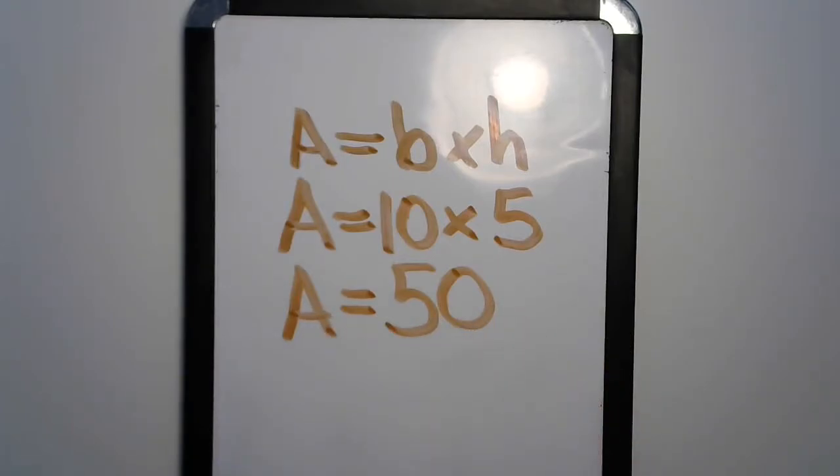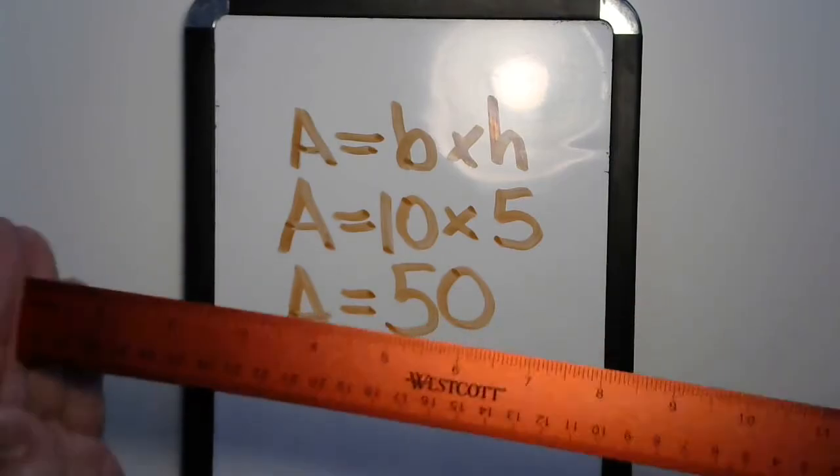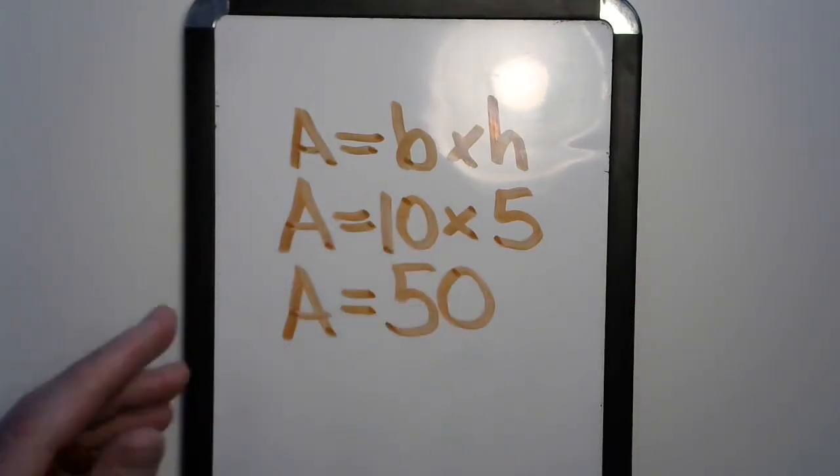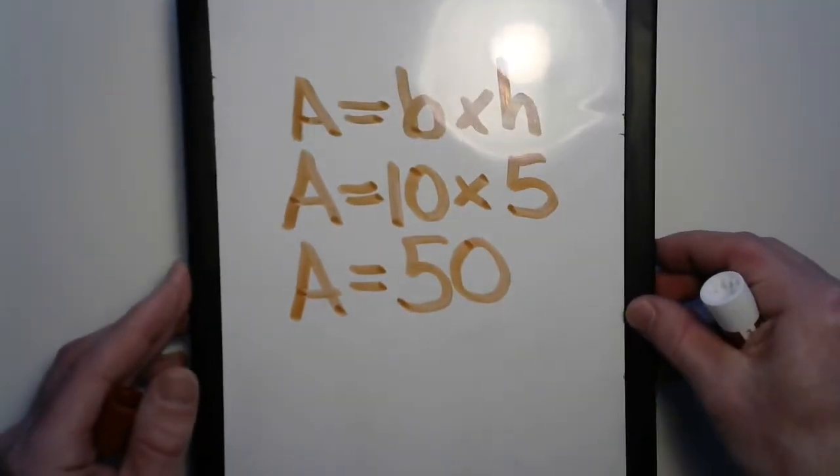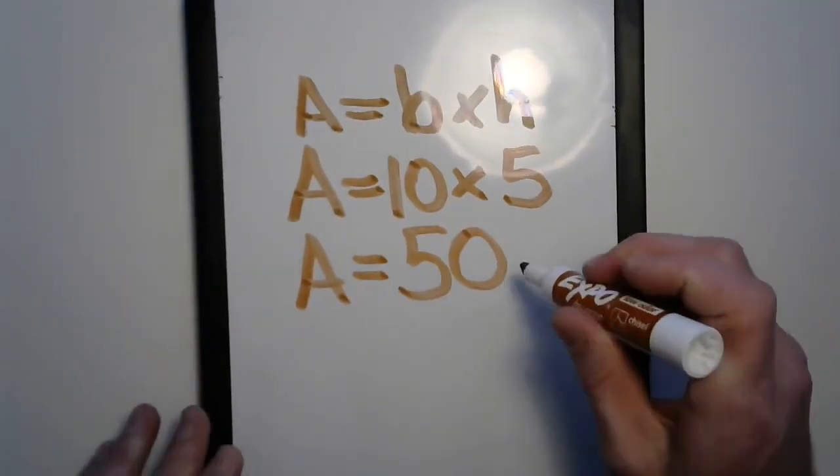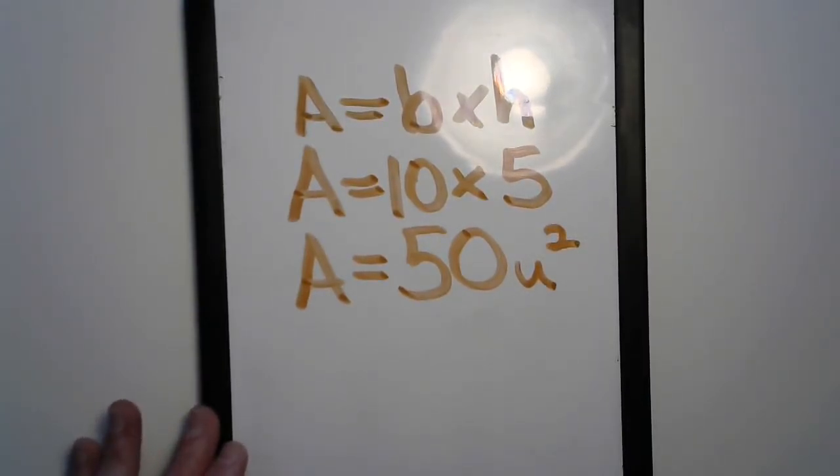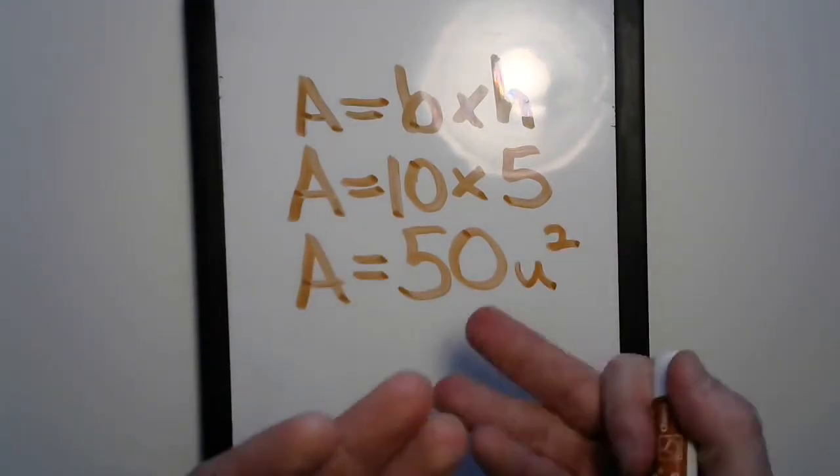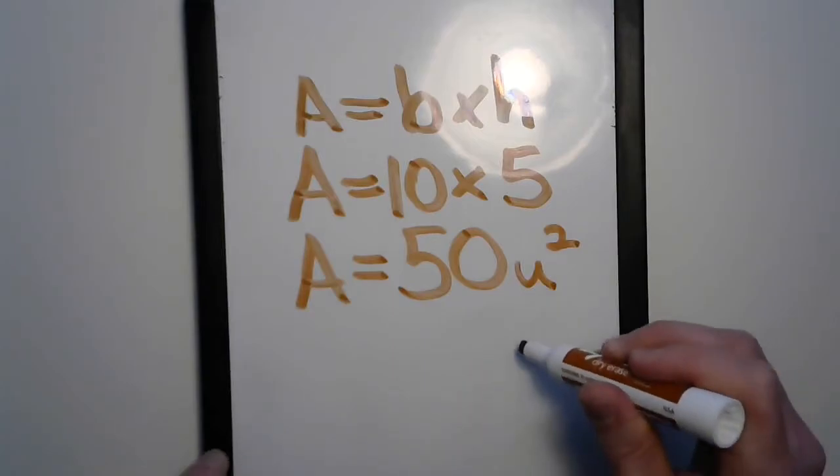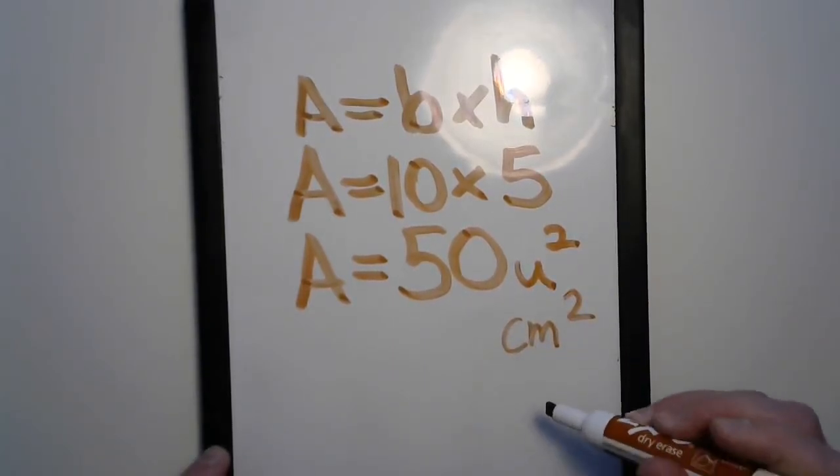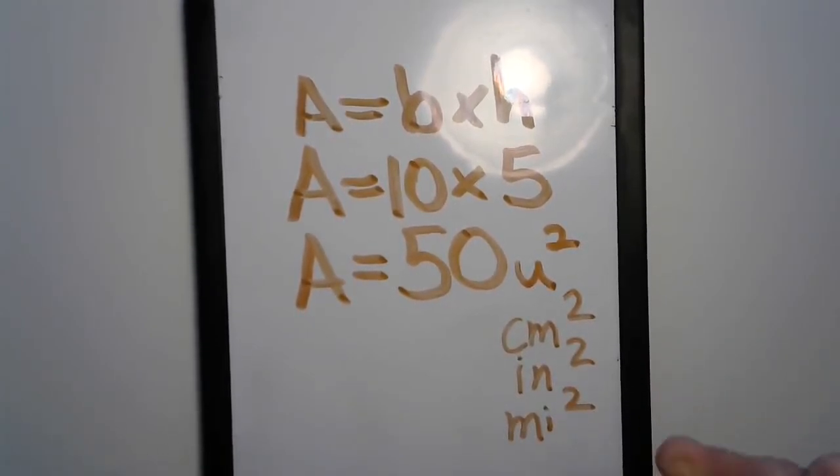But we're not done yet. There are special units. If we're measuring something like on a ruler, we've got inches or centimeters long, but this was different. Remember the grid? These are square units, so we will write U for units and a small 2 because it's squared, just like 1 times 1, 2 times 2, 3 times 3. They could be centimeters squared or inches squared or miles squared or fathoms squared or anything like that.